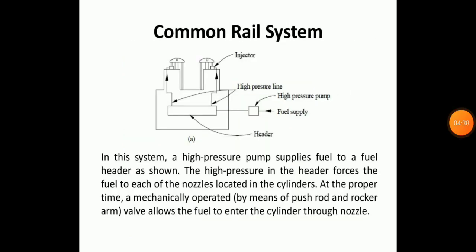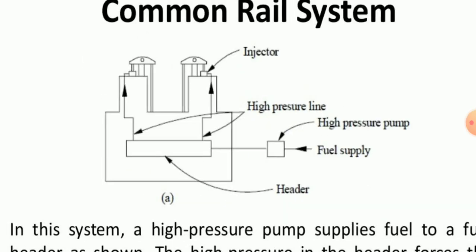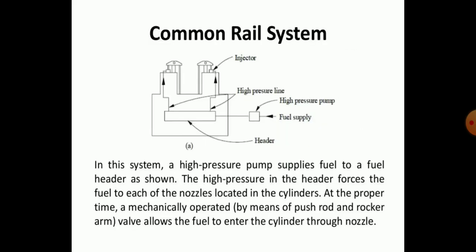In the common rail system, the high pressure pump supplies fuel to a fuel header as shown in the figure. The high pressure in the header forces fuel to each nozzle located in the cylinder. At the proper timing, mechanically operated by means of a push rod or rocker arm, the valve allows fuel to the cylinder through the nozzle. The injectors at the top, the high pressure pump, fuel supply, and headers are all shown in the line diagram.